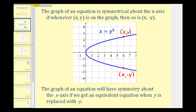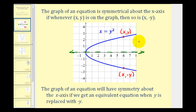There's also a way to verify x-axis symmetry visually. If we fold this graph across the x-axis, or across this horizontal line, notice how the top half and the bottom half would match up perfectly. If we fold this graph down across the x-axis, notice how the top would match up perfectly with the bottom.